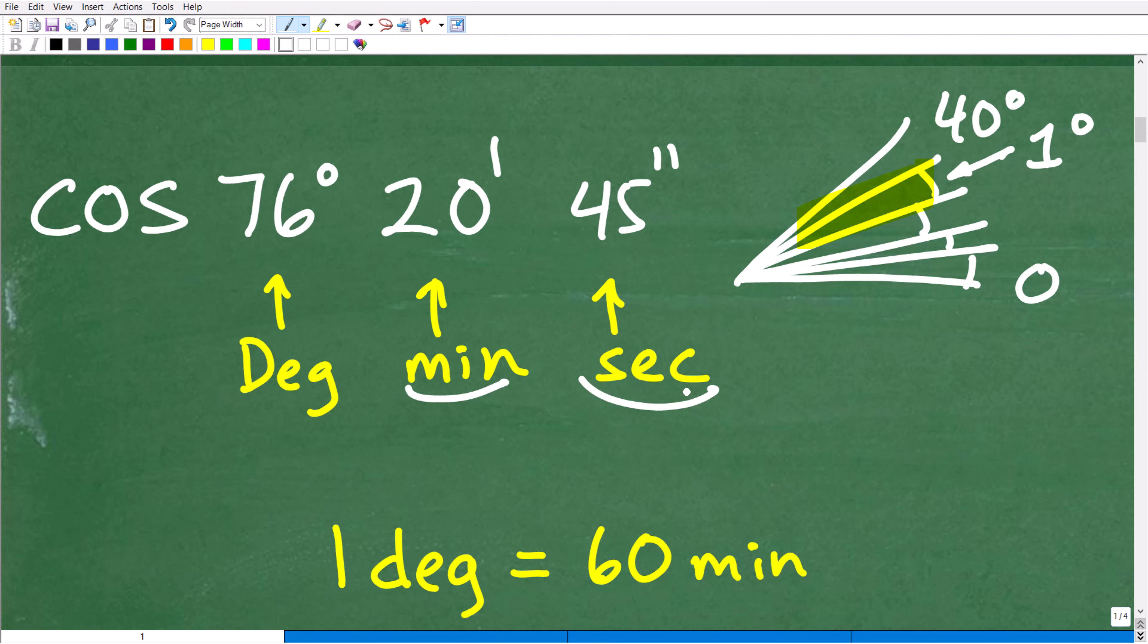So if you just remember your basic conversion factors in terms of time, 60 seconds in one minute, 60 minutes in one hour, but we're not using hours, we are using degrees.